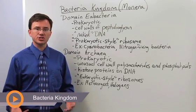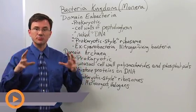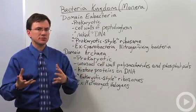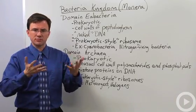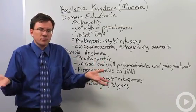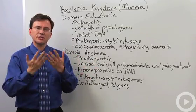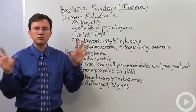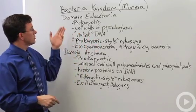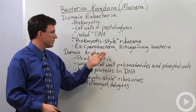Under traditional classification schemes, Monira is the name of the kingdom of bacteria. But in most modern textbooks, scientists, due to the big diversity in the group that we normally call bacteria, are starting to split that into two other groups called domains. One of these domains is called eubacteria. The other domain is called archaea.